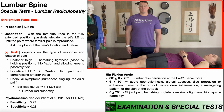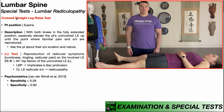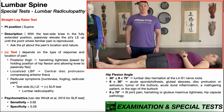We're going to be looking at a similar special test called the crossed straight leg raise test, and the psychometrics are essentially flipped. It has a very poor sensitivity at 28%, but the specificity is excellent at 90%. So the crossed straight leg raise test is excellent for ruling in a lumbar radiculopathy if it's positive, but the straight leg raise is excellent for ruling out a lumbar radiculopathy if it's negative. Generally speaking, this is the first special test you're going to use with the attempt to rule out the radiculopathy.